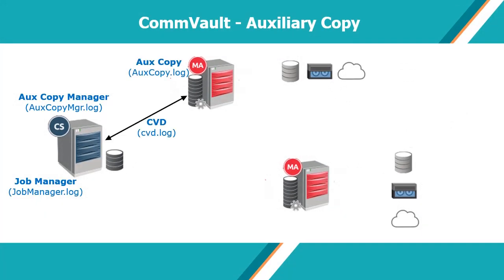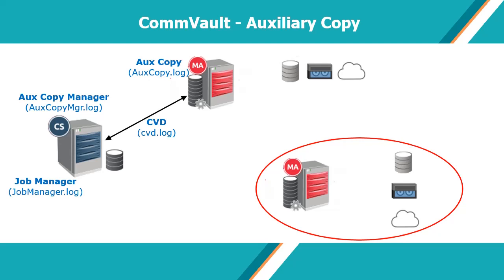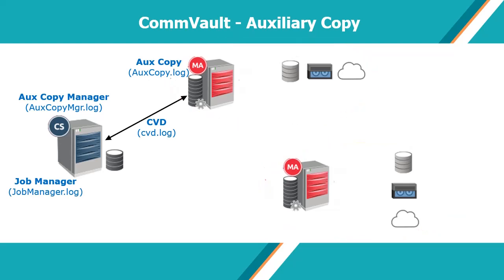The Auxiliary Copy Process on the Source Media Agent is invoked by Auxiliary Copy Manager on the CommServe. Job Manager keeps track of the progress. Auxiliary Copy Manager sends a copy file request to the Source Media Agent, then gathers destination copy, source volume, and Media Agent information. Auxiliary Copy Manager then sends a read data request to the Source Media Agent.